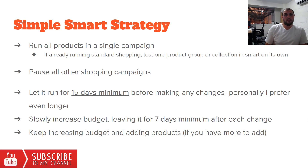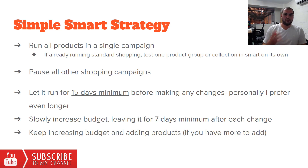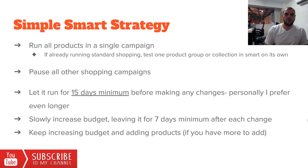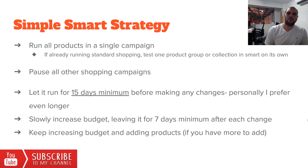Keep increasing the budget and adding products. Smart Shopping is a very easy way to test a bunch of products — to do this with Facebook Ads would be near on impossible. If someone is searching for it on Google, you've got the potential to sell it: mattresses, beds, filing cabinets, chairs, computer products — whatever it is, you can sell it on Google and outperform even more established stores. We came in with this store and blasted people that had been in the industry for a long time.